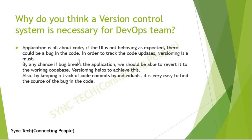Moving on to the next question: why do you think that the version control system is necessary for the DevOps stream? The application is all about the code. If you have any UI related issues or any bug fixes, we need to have the code. In order to track code updates we use versioning, which is mandatory to track bug fixes and identify issues. We can track which commit caused a particular issue, and if any bug breaks the application we can revert it to a working code base. By keeping track of code commits it will be easy for us to identify the bugs.